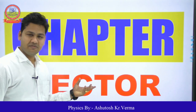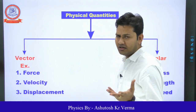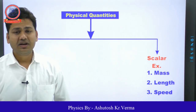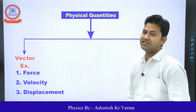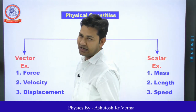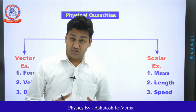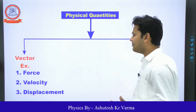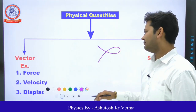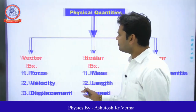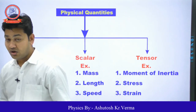Let's talk about the vector chapter. The vector chapter needs to be understood properly. First of all, physical quantities are categorized: vector, scalar, and tensor. Time, force, velocity, and displacement are counted as vector. Mass, length, and speed are counted as scalar quantities.